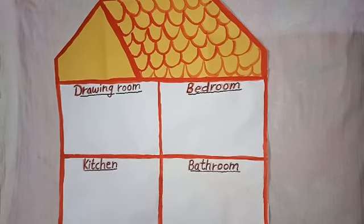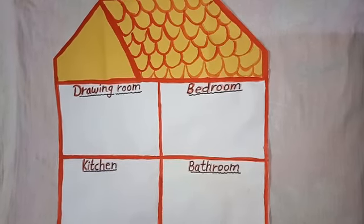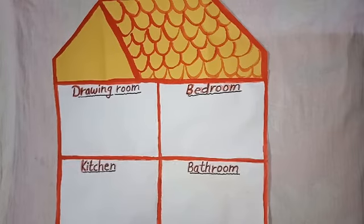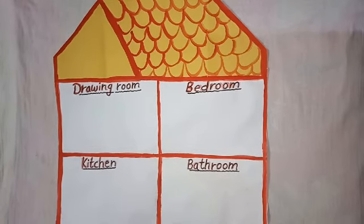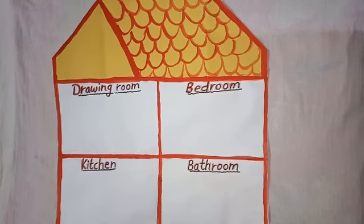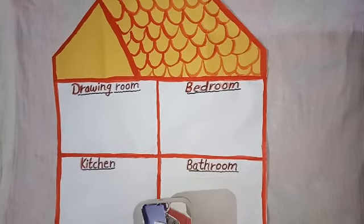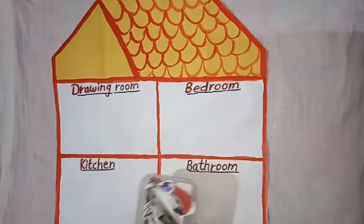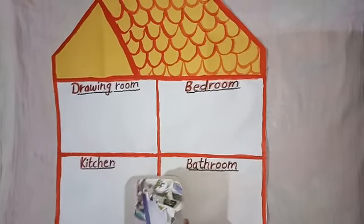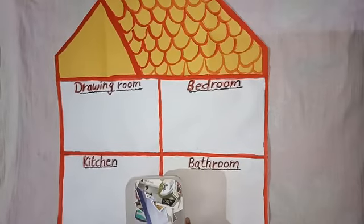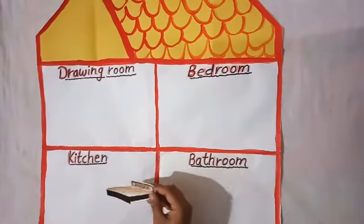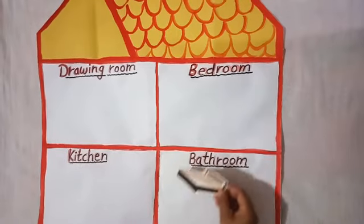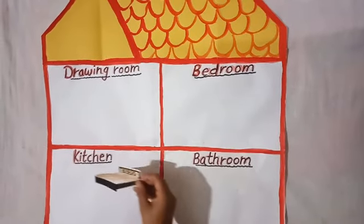So children, as you know, we just learned about our bathroom. Now we have to revise the rooms by doing some interesting activities. I have some flashcards. What we have to do — do you know? We have to put the thing in the proper room. So let's start.